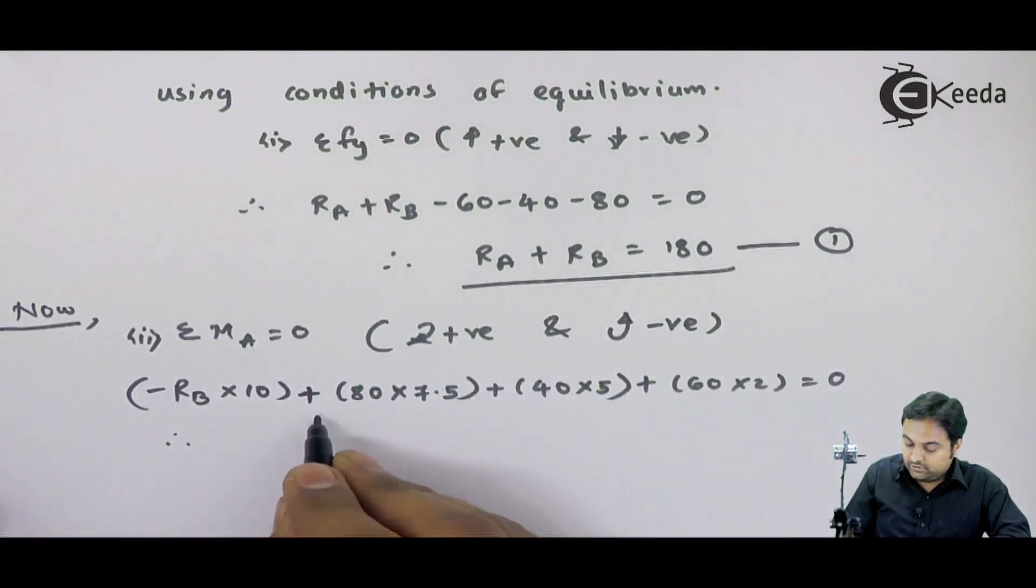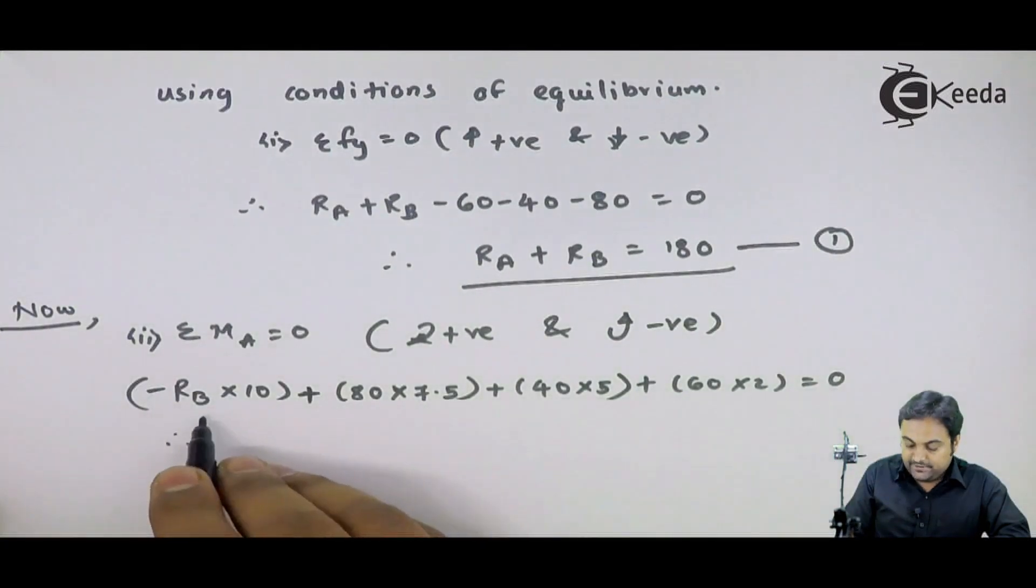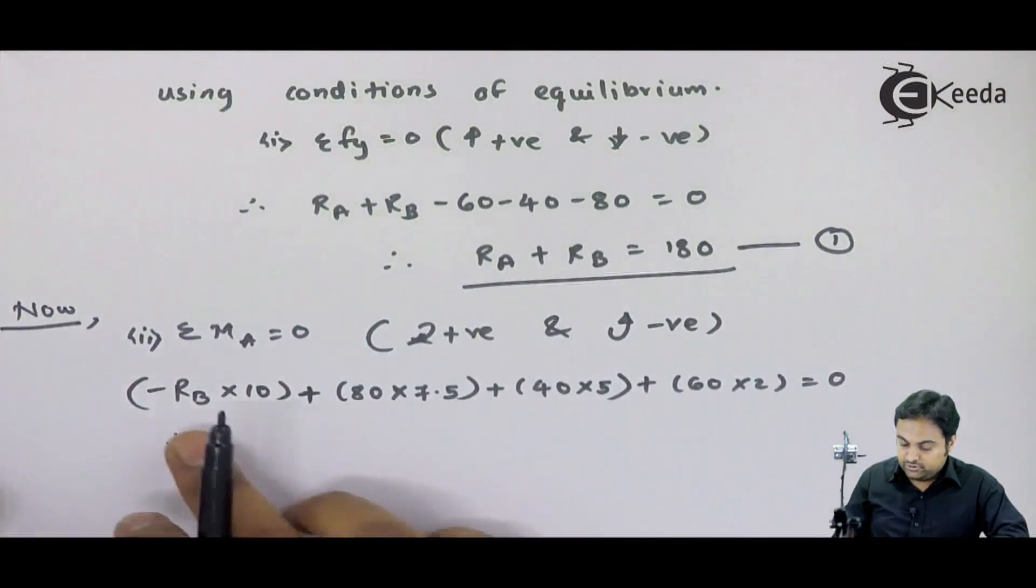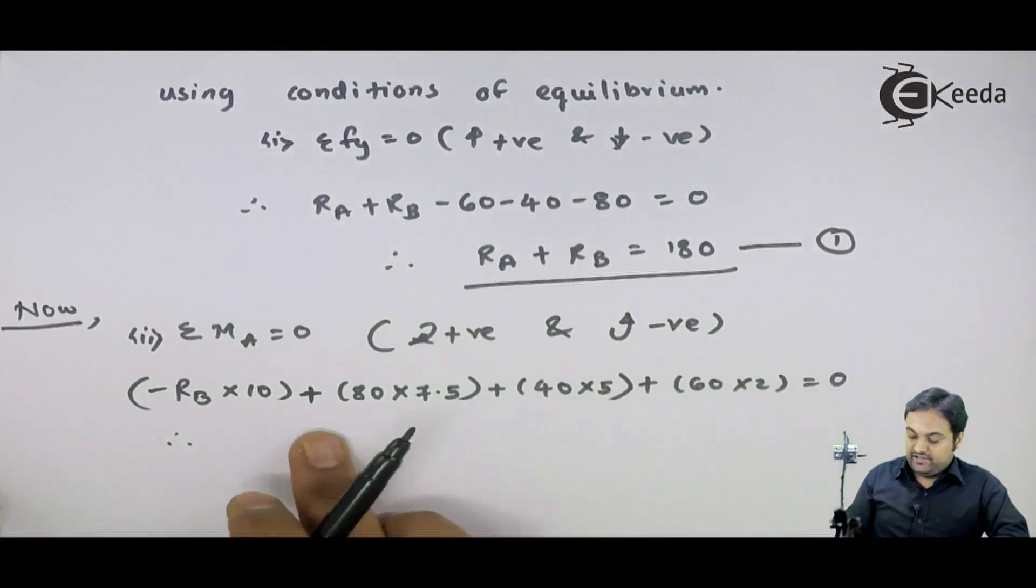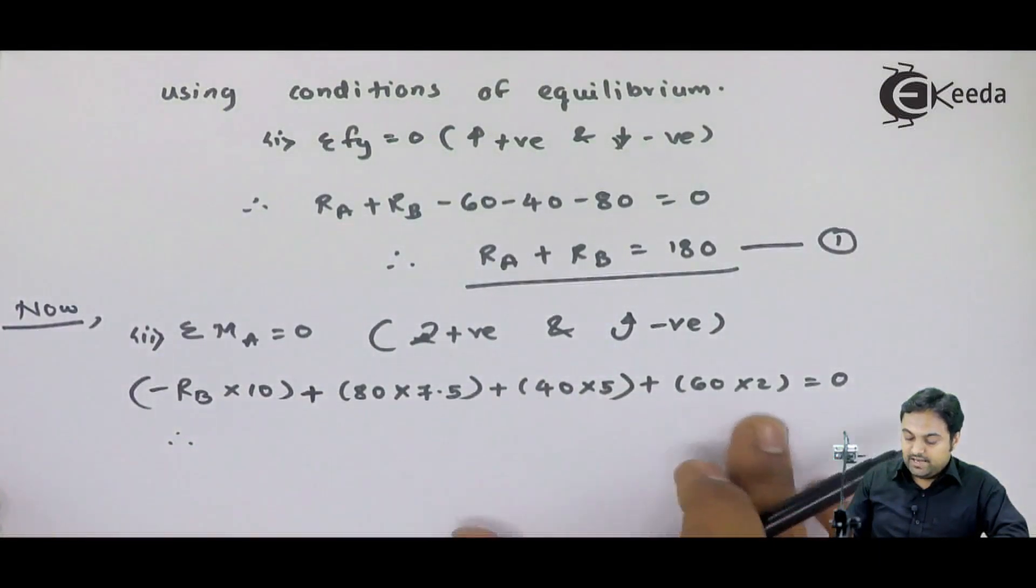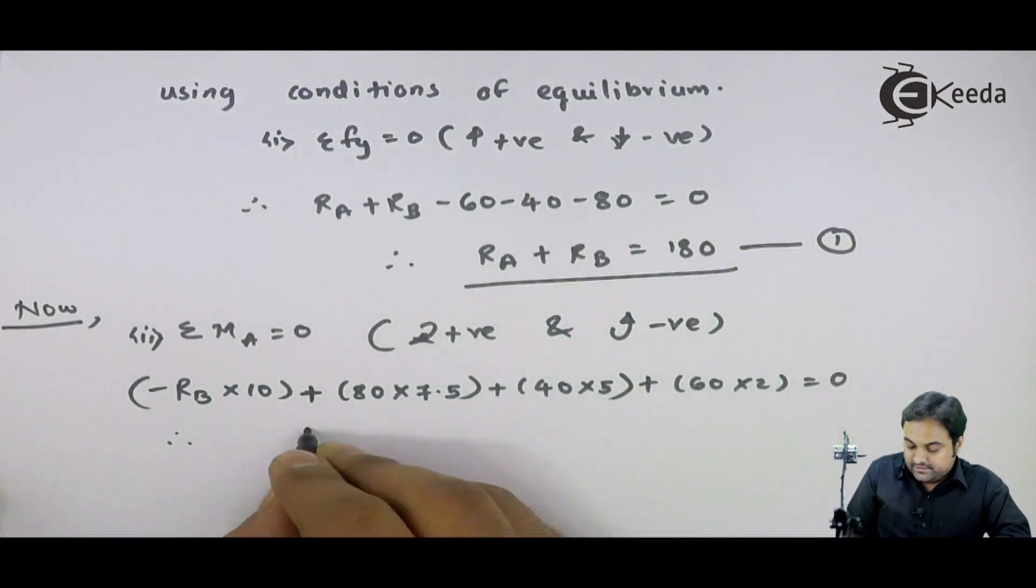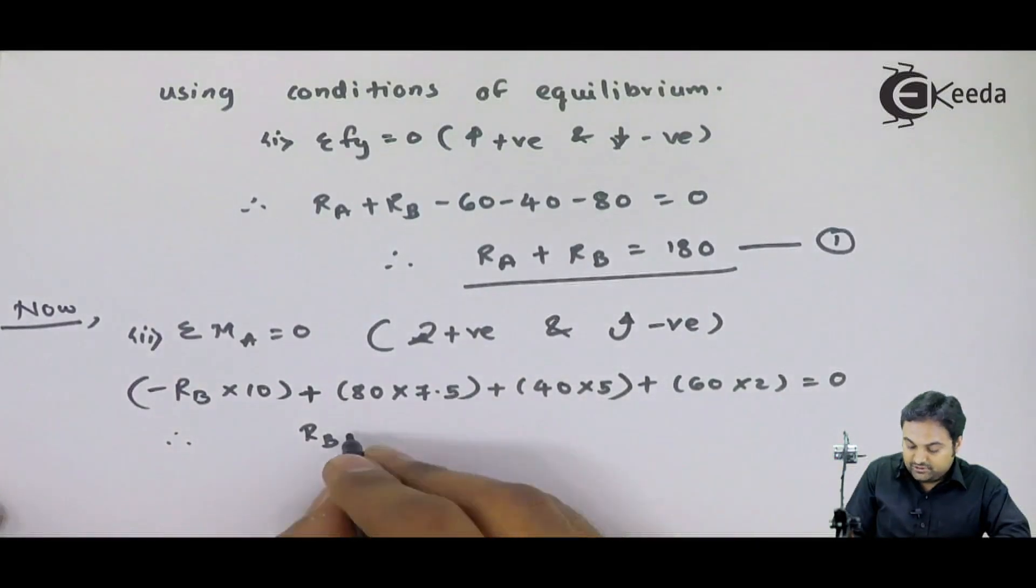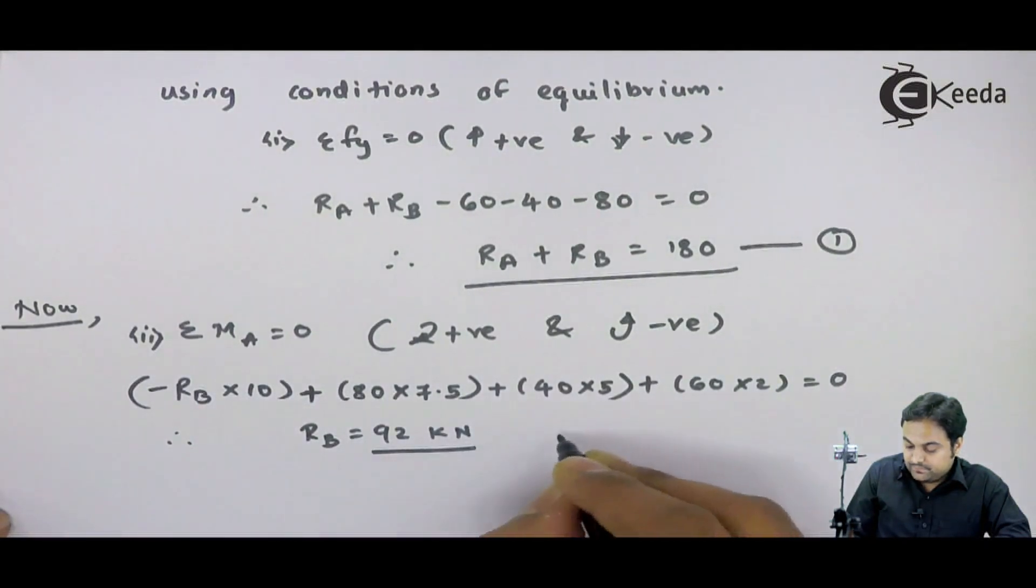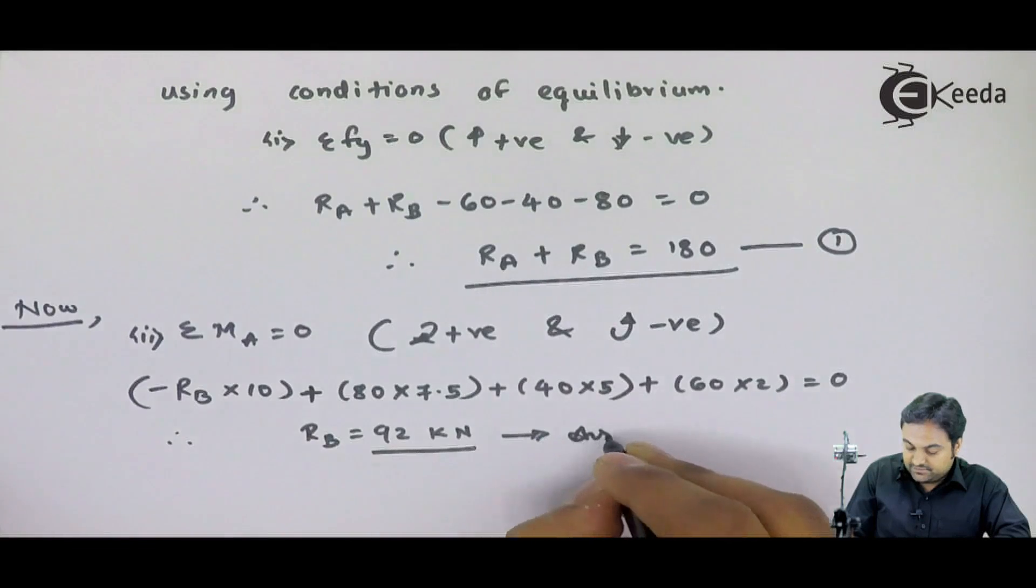Therefore, if I calculate, first I will be shifting RB into 10 onto the other side so it becomes positive. If I calculate all terms here, add the value, divide this by 10, I will be getting my answer of RB which comes out to be 92 kN, and this is my first answer.